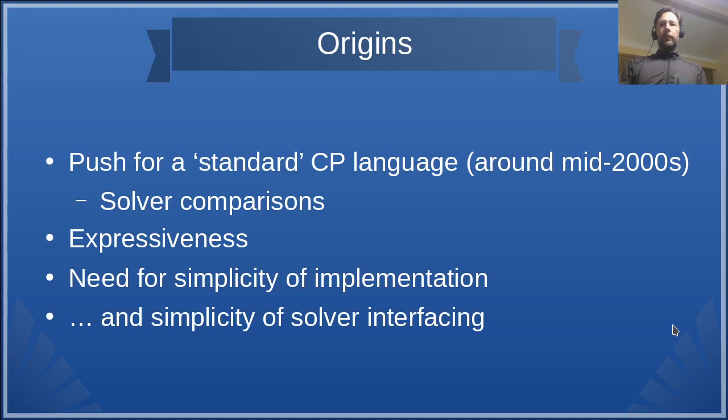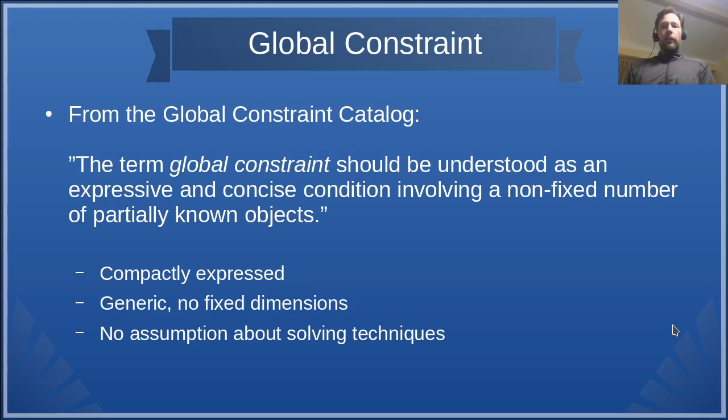Motivation for MiniZinc. There was a push for a standard CP language to enable solver comparisons in particular, which means expressiveness, simplicity of implementation and simplicity of attaching new solvers. The global constraint catalog defines this as a high level description which does not involve fixed number of variables or any fixed solver technology, requiring algebraic, logical, or procedural description of the constraint.